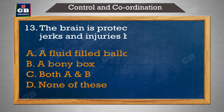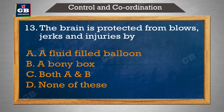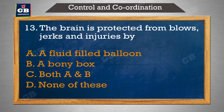The brain is protected from blows, jerks and injuries by — brain ko blows, jerks aur injuries se surakshit kiya jata hai: A) a fluid-filled balloon, B) a bony box, C) both A and B, D) none of these.